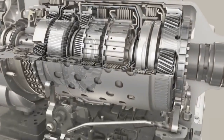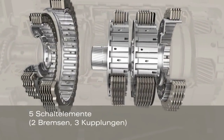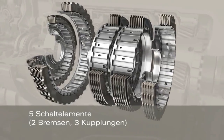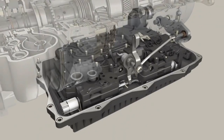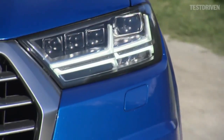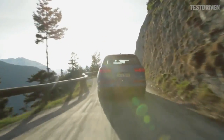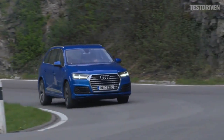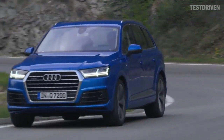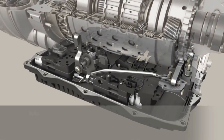For the 8-speed Tiptronic automatic transmission, ZF set out to design a new and very different gear set concept. The result is a revolution in transmission design: a concept with only four gear sets which requires only five shift elements, of which only two are open in any given gear. The 8-HP also requires no more than three multi-plate clutches and two brakes, which allows it to achieve a greater degree of efficiency. As a result, drag losses in the transmission are sustainably reduced.